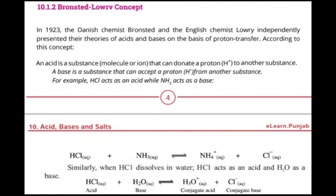Dear students, we are going to start our lecture number 11 and the topic of discussion is the Lowry-Bronsted Concept. In the previous lectures, we discussed the Arrhenius Concept, which had a lot of limitations — it could not describe acidity and basicity in non-aqueous medium and for other compounds. As a result, we have different types of concepts to define acids and bases, and in that we have the Lowry-Bronsted Concept.